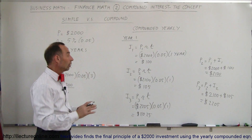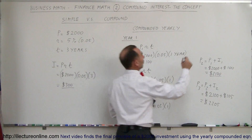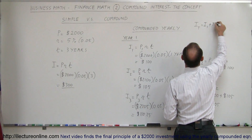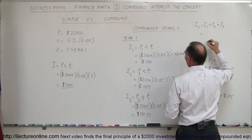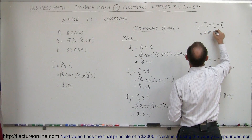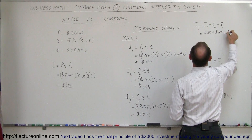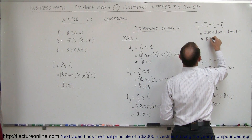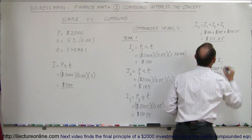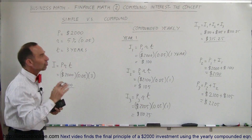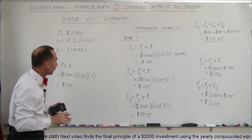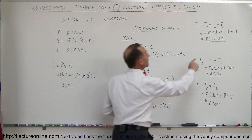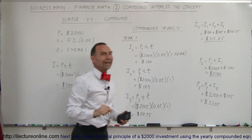So what is the total amount of interest that we've earned? The total interest equals interest from year one plus year two plus year three: $100 + $105 + $110.25 = $315.25. With simple interest we earned $300; compounded yearly we earned $315.25.